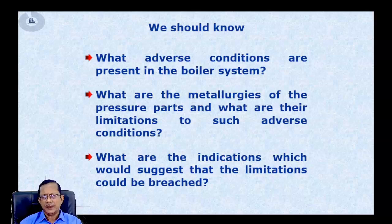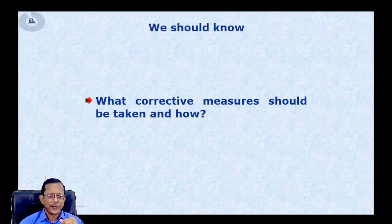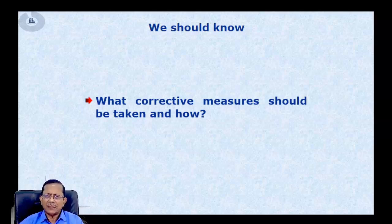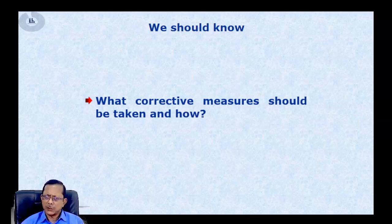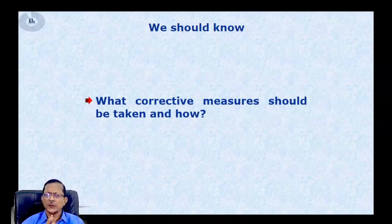We should definitely know what corrective actions are required. For example, if there is an overheating failure because of high gas temperature, and that high gas temperature in the upper furnace zone is because of delayed combustion, then in order to remove the cause I need to control the delayed combustion condition and bring the combustion to the right zone. That is the corrective measure, and I should know how to implement it.